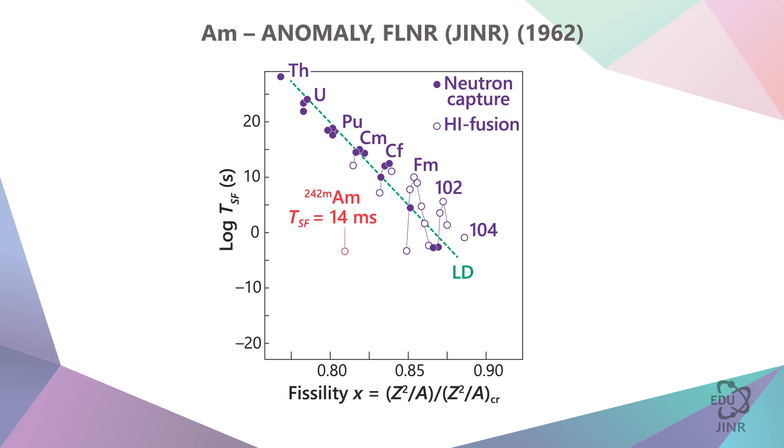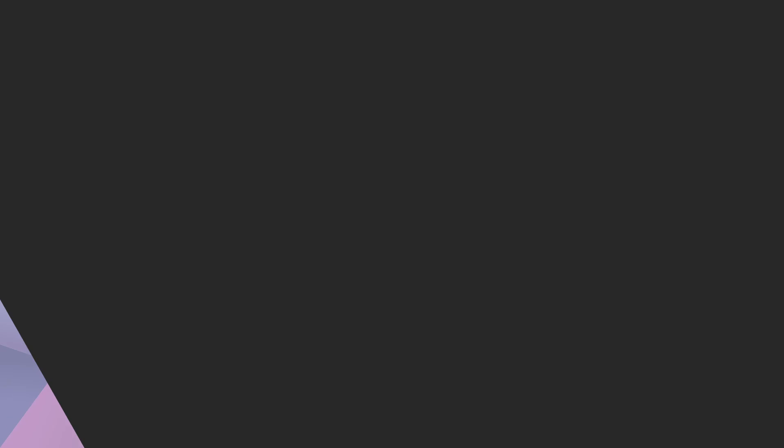It was the element americium, with atomic number 95, which has a half-life of 14 milliseconds. It was completely unbearable, because americium was already a known element. Its half-life was much longer than the element we hoped to discover and was measured as 10 to the power of 14 years.